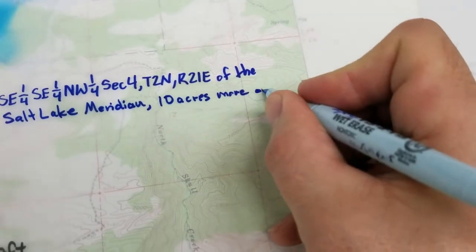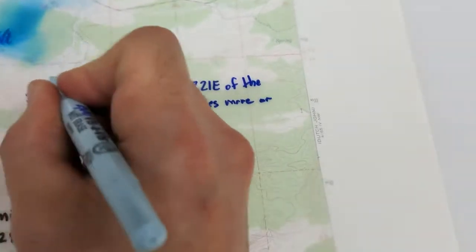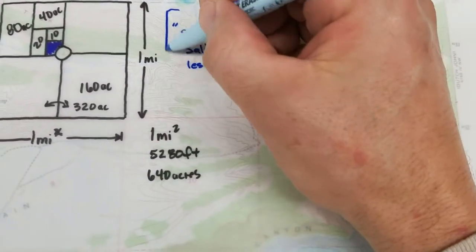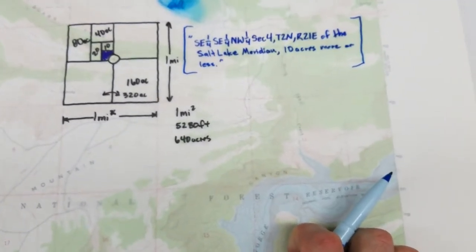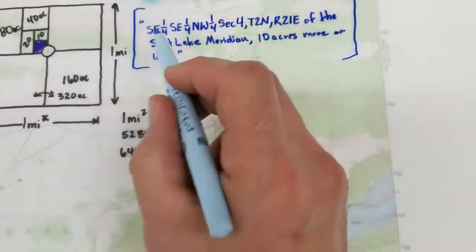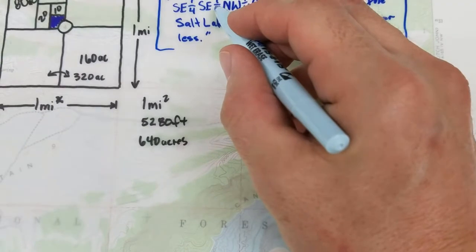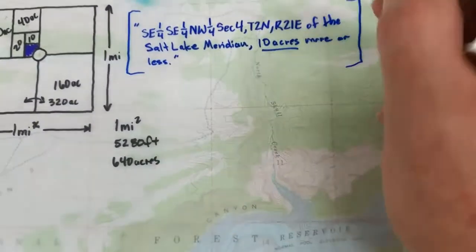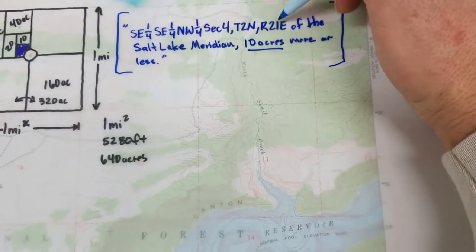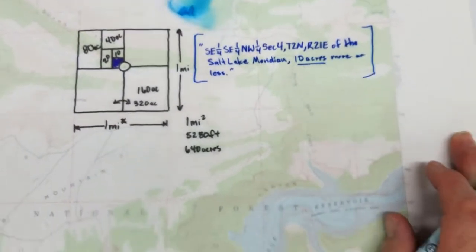That is what your land description should read like. You've got to have all this information: the nested quarter descriptions, the number of acres, the township, the range, and the name of the meridian. Anything short of that and you're missing something.